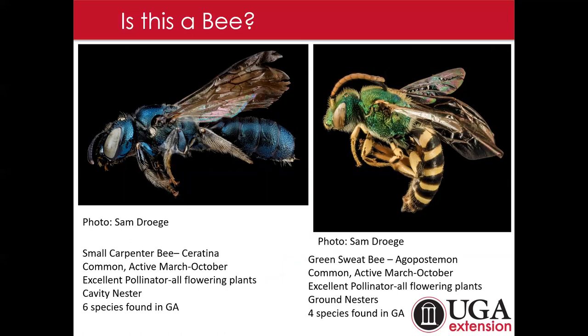These two are actually native bee species in Georgia and don't look much like what most of us would associate with a bee — they have bright coloration. We've got a sweat bee and a small carpenter bee on the left. These beautiful bees can be active throughout the season, but a lot of our native bees have very brief seasons — often just a six to eight week window in either early spring or mid-summer.